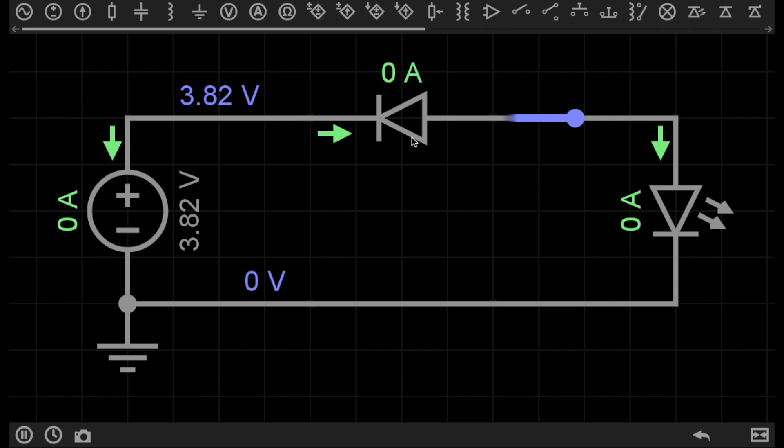Diodes are a semiconductor material and that means that they have the ability to both conduct and oppose the flow of current.